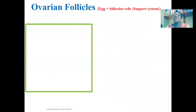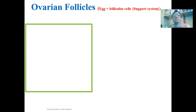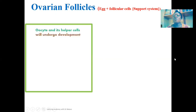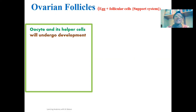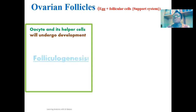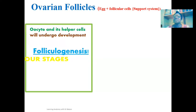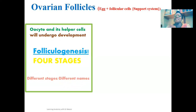The ovarian follicle is essentially the egg or ovum surrounded by follicular cells. These follicular cells serve as a supporting system — they nourish the developing follicle and also deliver gonadotropin-releasing hormone to support its continuous growth and development. The oocytes and the granulosa cells undergo growth and development through the process of folliculogenesis, which occurs in four stages.